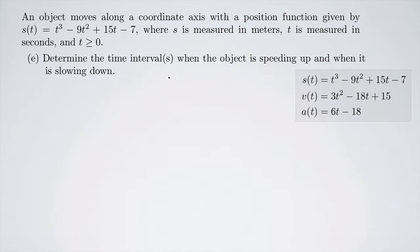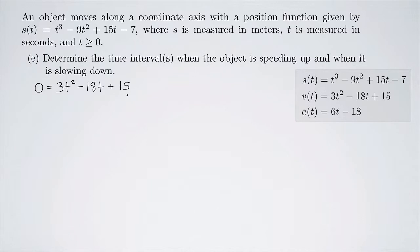We need critical points where both acceleration and velocity are zero. We already found the acceleration is zero at t equals 3. Setting the velocity equal to zero: 0 equals 3t squared minus 18t plus 15, which factors as 3 times (t minus 1)(t minus 5), giving critical points at t equals 1 and t equals 5. So our number line has points at 1, 3, and 5.